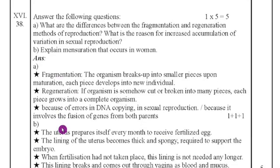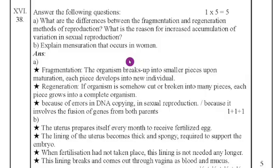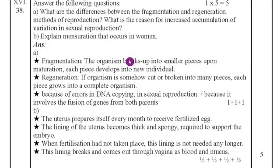Last main: answer the following questions — a five-marks question. What are the differences between the fragmentation and regeneration methods of reproduction? What are the reasons for increased accumulation of variation in sexual reproduction? Explain menstruation that occurs in women. Answers for both options are provided here. Practice thoroughly and get good marks in your final exam. All the best for your exam.